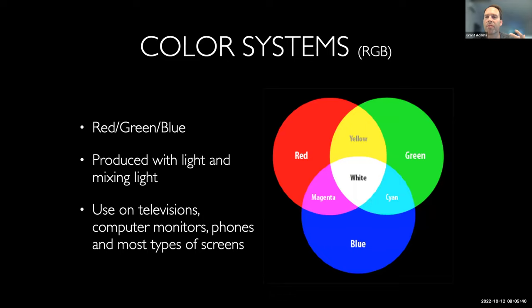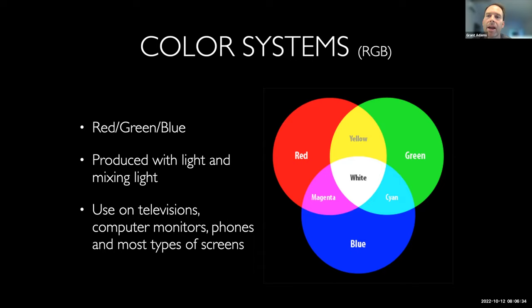Let's talk about color systems — you've run across these in lectures and assignments. We have two primary color systems. The first is RGB, which is produced with light. In this system we have three colors of light: red, blue, and green. As we shine those lights together, we get secondary colors. A red and green light together form yellow; red and blue together produce magenta; green and blue together produce cyan. If you combine red, green, and blue all together, you get white.